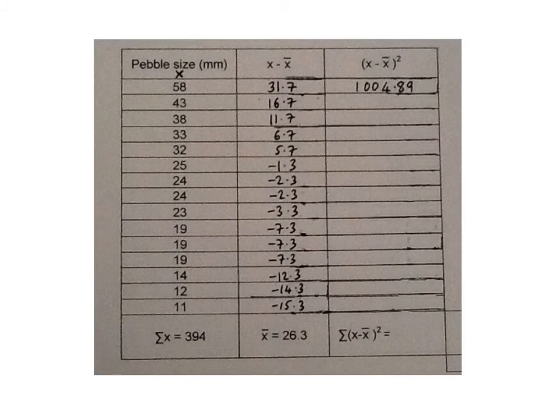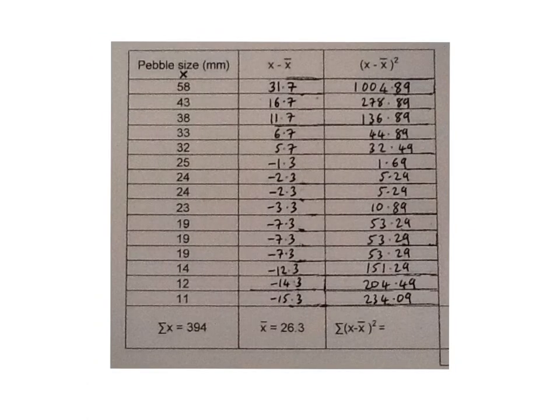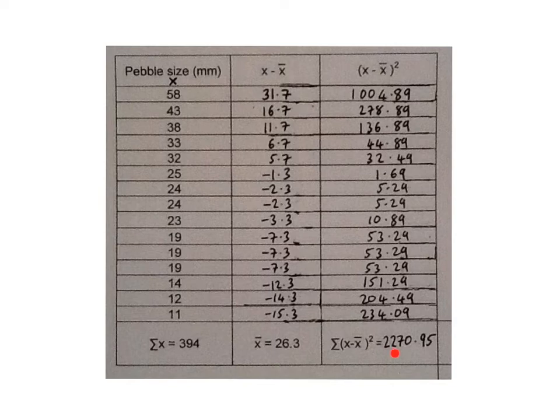In the third column here we have x minus the mean and we need to square that to get rid of any negative values. So 31.7 times itself gives you 1004.89 and you would proceed to do this for each of the values. Here you can see that each of the values has been calculated for x minus the mean squared. And now you would need to add up that column. So once you've added up that column you come to 2270.95 and this is what you need to calculate standard deviation.